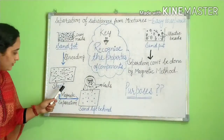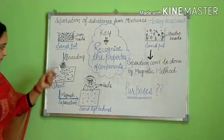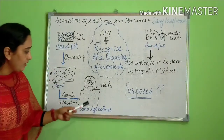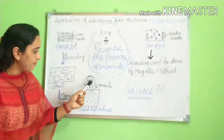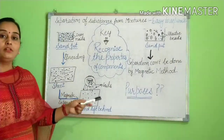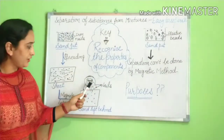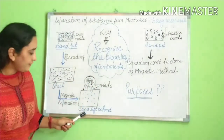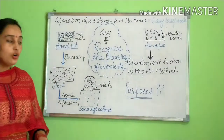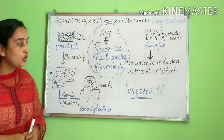In magnetic separation, we spread the components of the mixture on a sheet, and then a magnet is brought near the mixture. What happens? Iron nails, being magnetic, get attracted towards the magnet, and the sand particles are left behind, because the iron nails and sand have a difference in their properties.